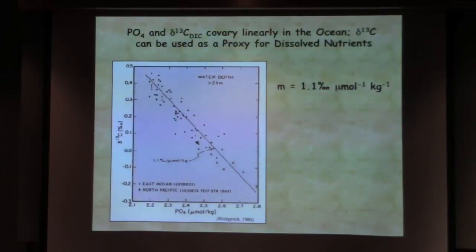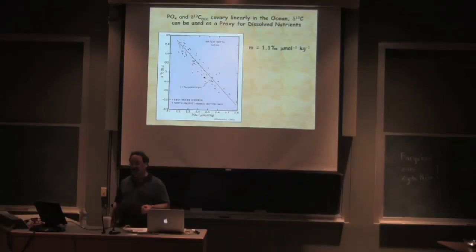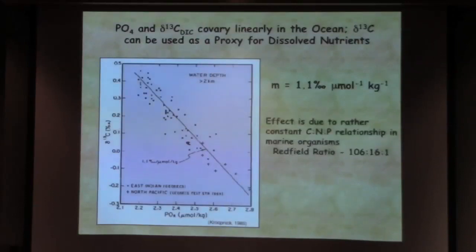So we wind up with this really good delta C-13 phosphate relationship. Why does this relationship exist? It exists because in the ocean, unlike terrestrial environments, the carbon to nitrogen to phosphorus ratio of marine organisms tends to be relatively constant. We call this the Redfield ratio: it's about 106 atoms of carbon to 16 of nitrogen to 1 of phosphorus. Obviously this 106 to 1 is why we have this 1.1 per mil per micromole phosphate.